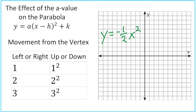For this next example, let's make the a value negative and a fraction. We've got an a value of negative one-half. If you go left or right one space, you're going to go up or down one squared times negative one-half, which is negative one-half. When that value is positive, we go up; when it's negative, we go down. From our vertex at zero, zero, this one would go over one and down one-half on both sides. Two squared times negative one-half is four times negative one-half — half of four is two — so that's negative two. If we go over two spaces, we go down two spaces.